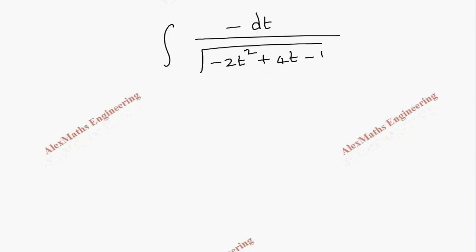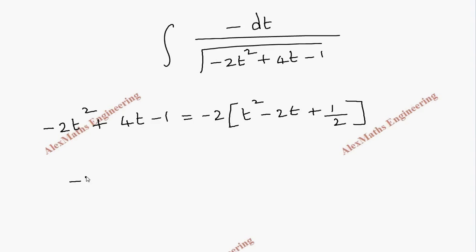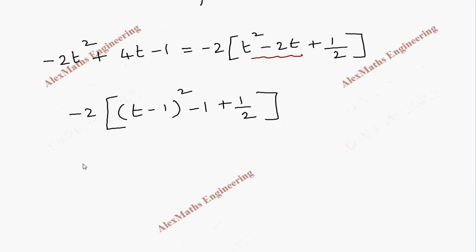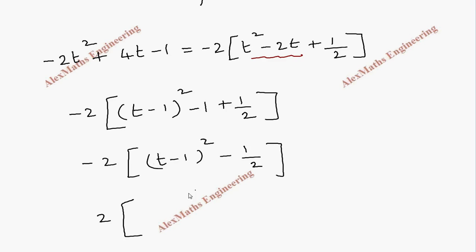Now we apply completing the square to −2t² + 4t − 1. Taking out the coefficient −2: −2(t² − 2t + 1/2). The two terms t² − 2t come from (t−1)², but expanding that gives +1 which we don't want, so we subtract 1: −2[(t−1)² − 1 + 1/2] = −2[(t−1)² − 1/2]. Taking the minus inside gives: 2[1/2 − (t−1)²], i.e., 1 − 2(t−1)².